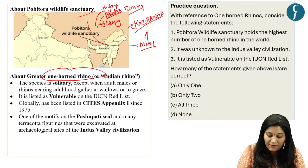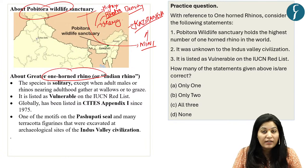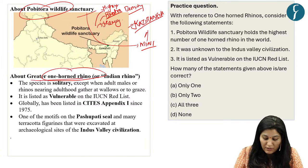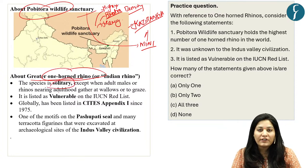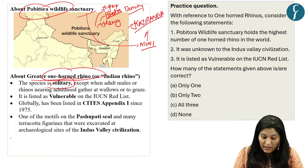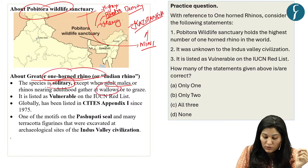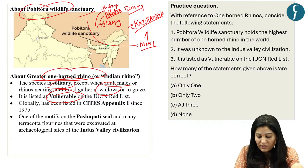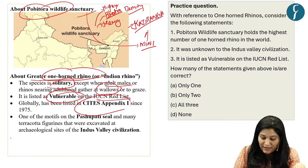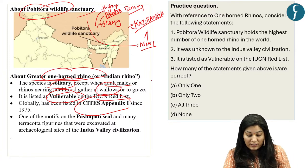Key facts about the greater one-horned rhinoceros: it is a solitary species, usually staying alone except when adult males gather at wallows to graze. It is listed as Vulnerable on the IUCN Red List and under CITES Appendix I since 1975. Conservation is an important UPSC theme — a question based on different species came in 2019.